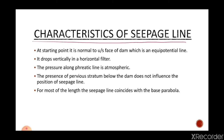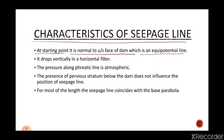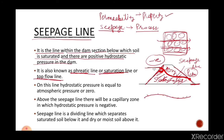Now the characteristics of the seepage line. At the starting point, it is normal to the upstream face of the dam, which is an equipotential line. The face of the dam is an equipotential line — meaning all points have equal pressure head. The seepage line drops vertically into a horizontal filter. When a filter is provided, this seepage line will not cut the downstream face of the dam; instead it will drop vertically into the filter.